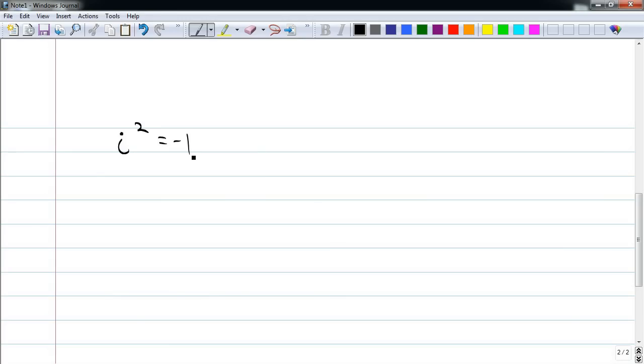Now this leads some people to conclude that i is the square root of negative 1. And that isn't wrong, it's just not the only possible version for i. i could also be the negative square root of negative 1. Either definition is valid.